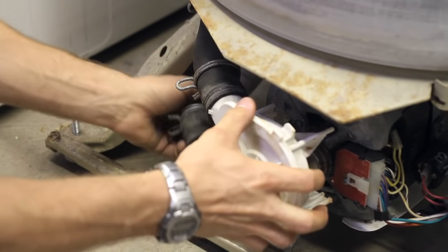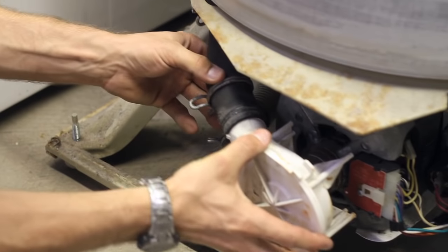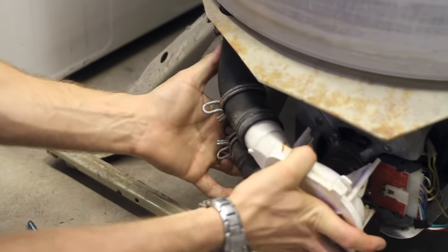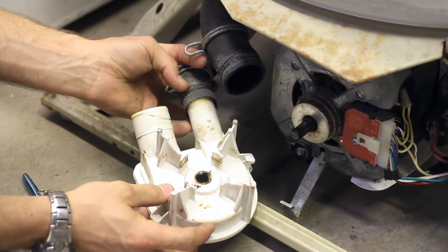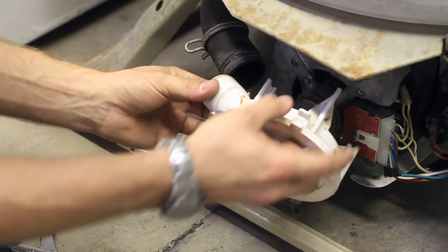So we're going to reverse the steps and put the hoses back on. Make sure you're lining up the drain pump shaft with the motor shaft.